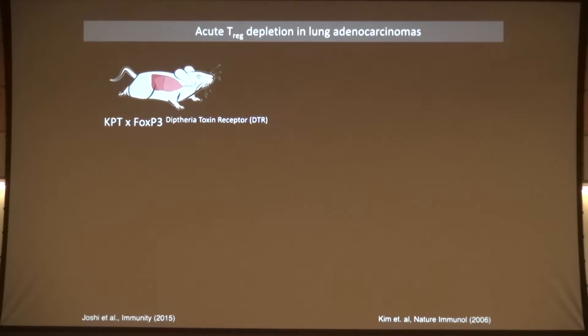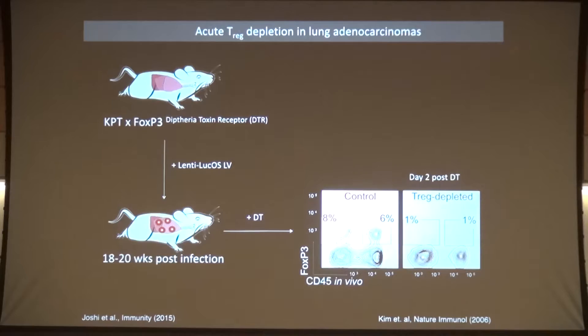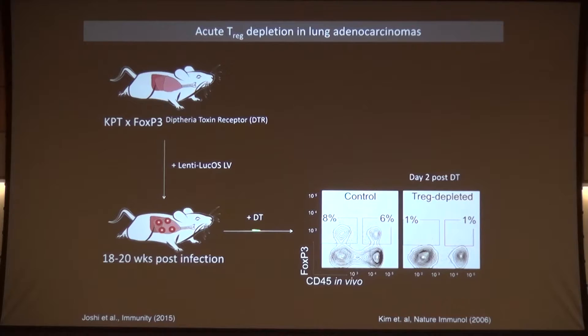The first thing Nick did was count up the regulatory T cells at that late stage where immunosuppression is taking place. Indeed, they're increased dramatically — tissue-resident Tregs increased by 20-fold. So that's guilt by association, but are they really important? The way to ask that question is to eliminate them in an established tumor and see what happens. Fortunately, Sasha Rudensky's lab had made a FOXP3-diphtheria toxin receptor knock-in mouse that allows you to deplete regulatory T cells quite selectively.